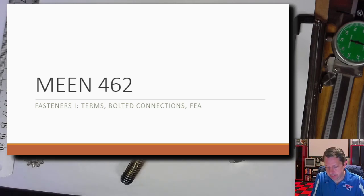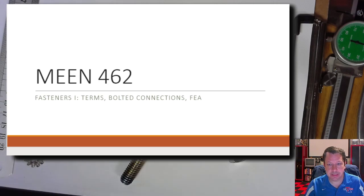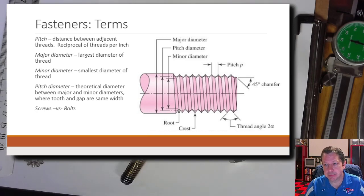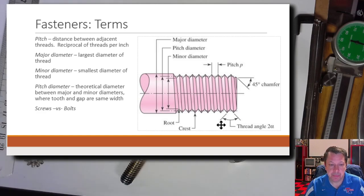I pulled some diagrams up on the PowerPoint so they're easier to see. We already had something like this when we looked at acme screws and square threads — this is the same type of diagram. One different term here is 'pitch diameter,' where last time we called it 'mean diameter' — same idea. The thread angle definition is the same, though it's not necessarily the same angle. Also, the last thread often has a chamfer to help start the screw.